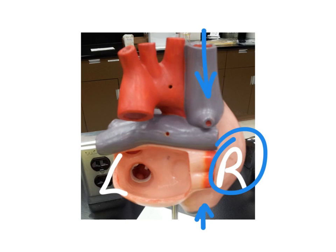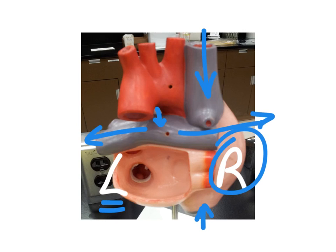I also want to point out that this is the posterior view, so the pulmonary trunk would have come to the dorsal side and then branches into left and right pulmonary arteries. Remembering that this is a dorsal view, so the left and right have now switched — this would be the right pulmonary artery and this is the left pulmonary artery.